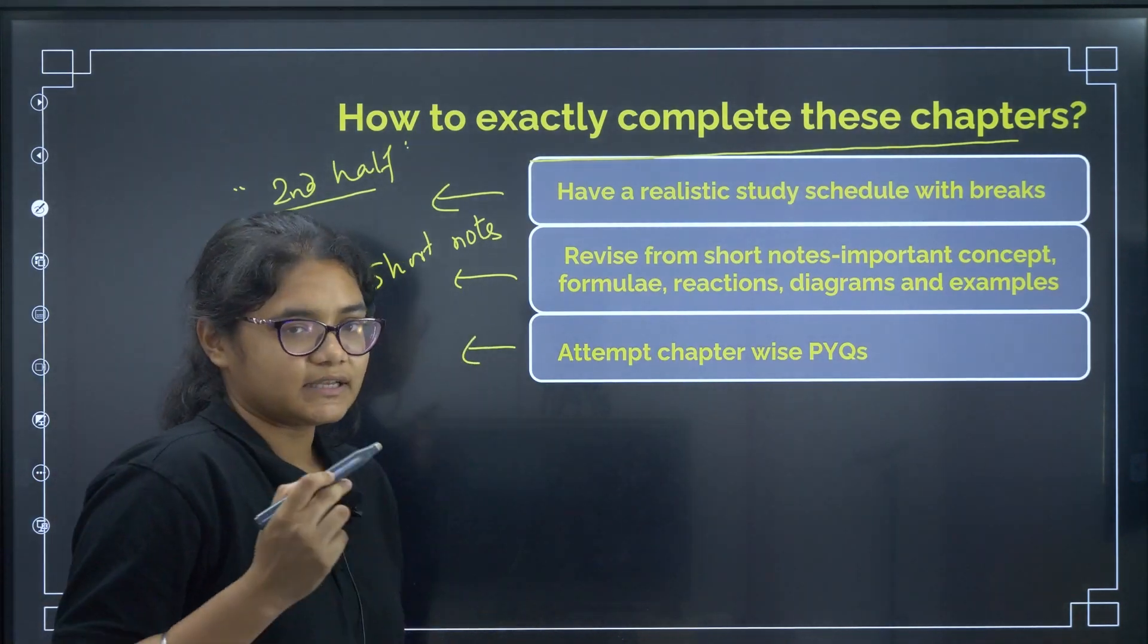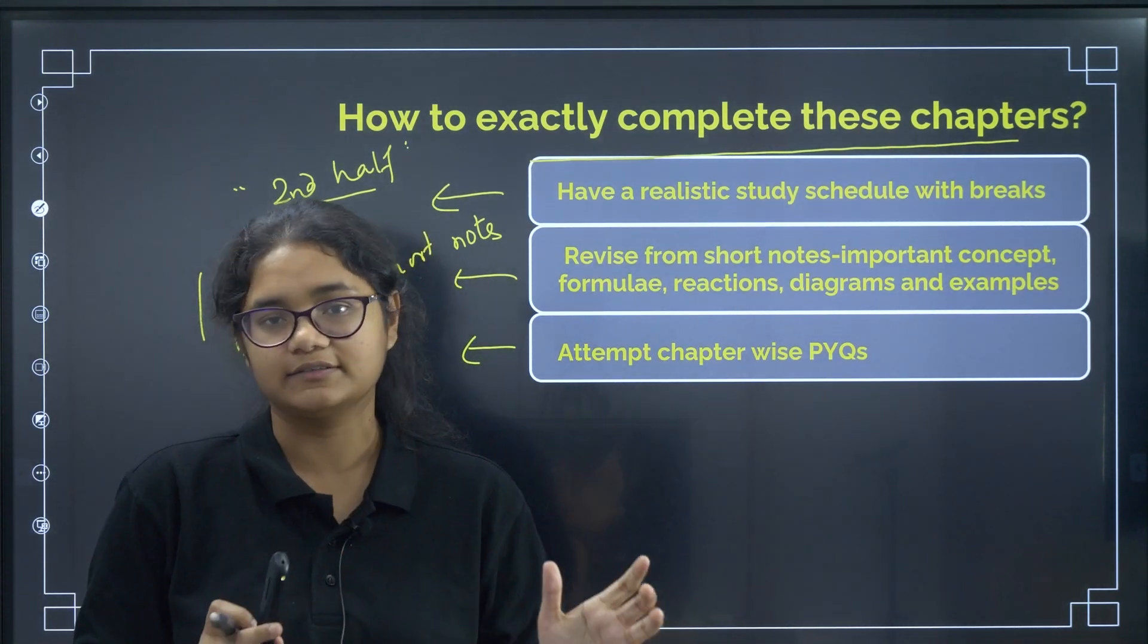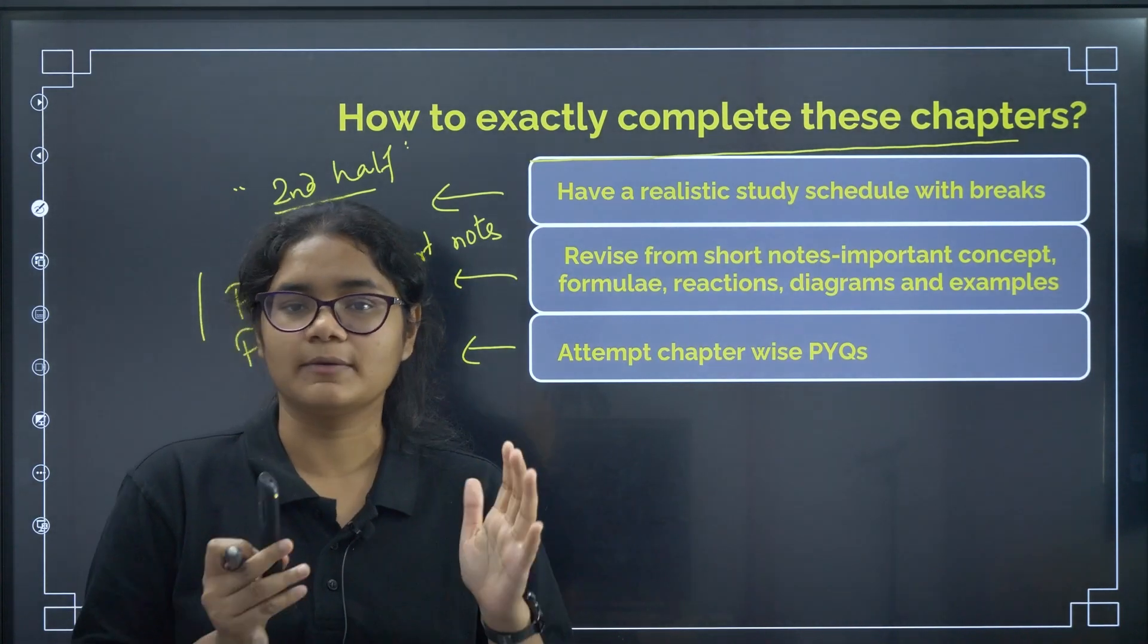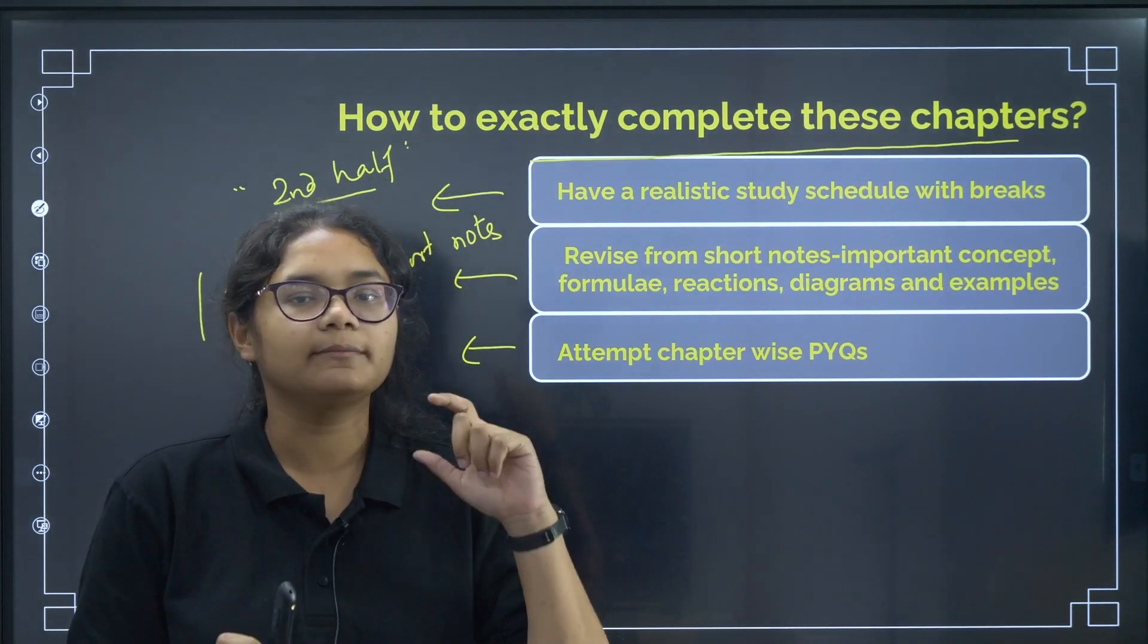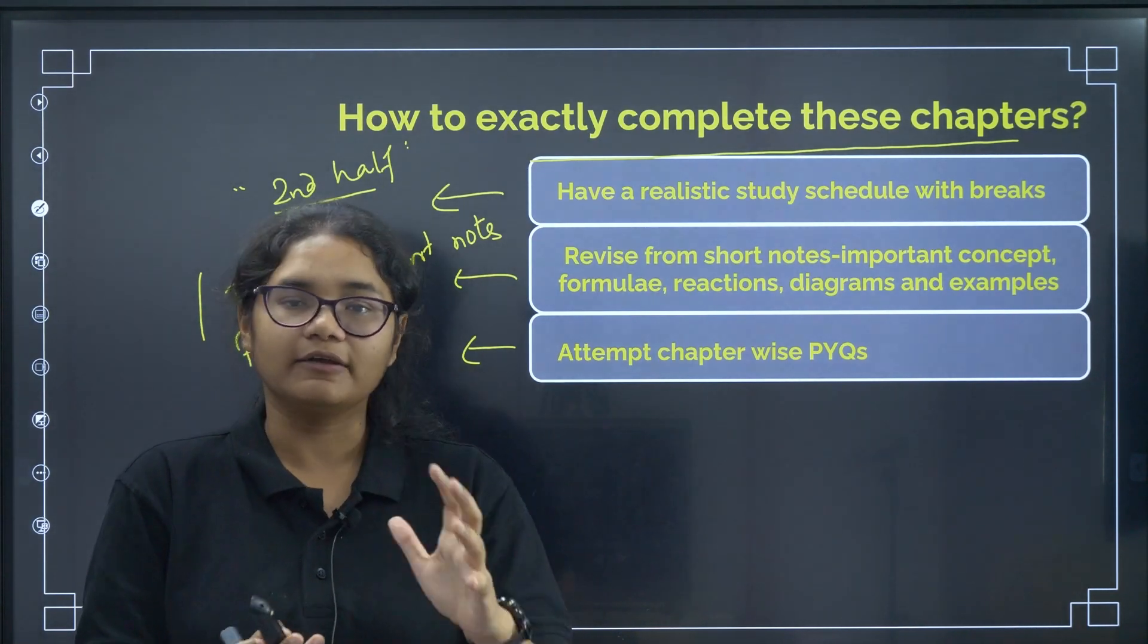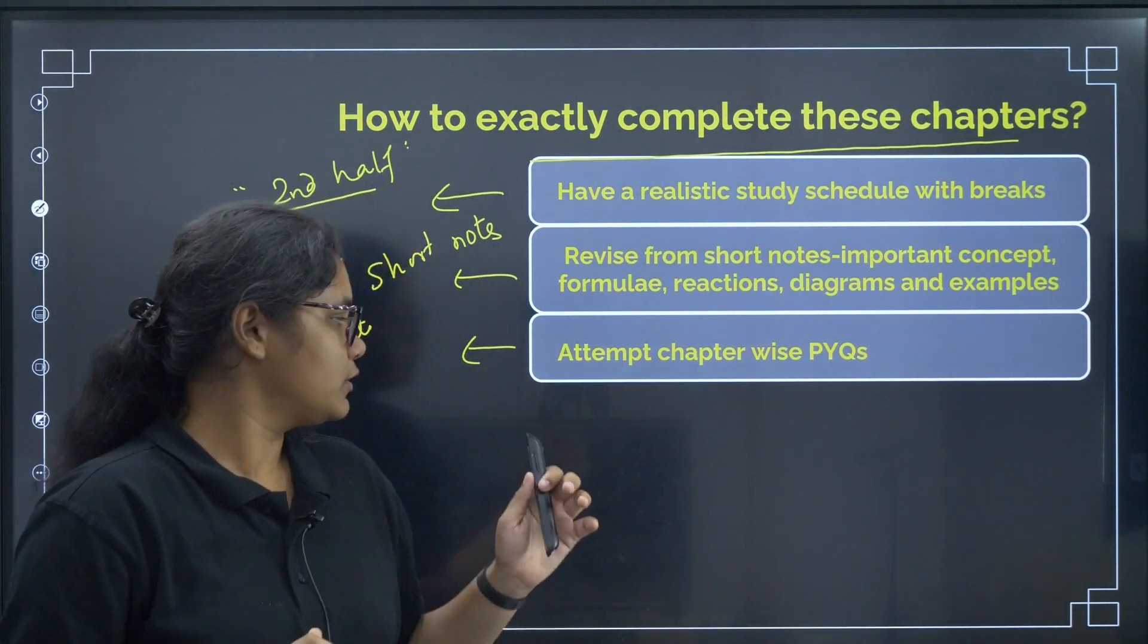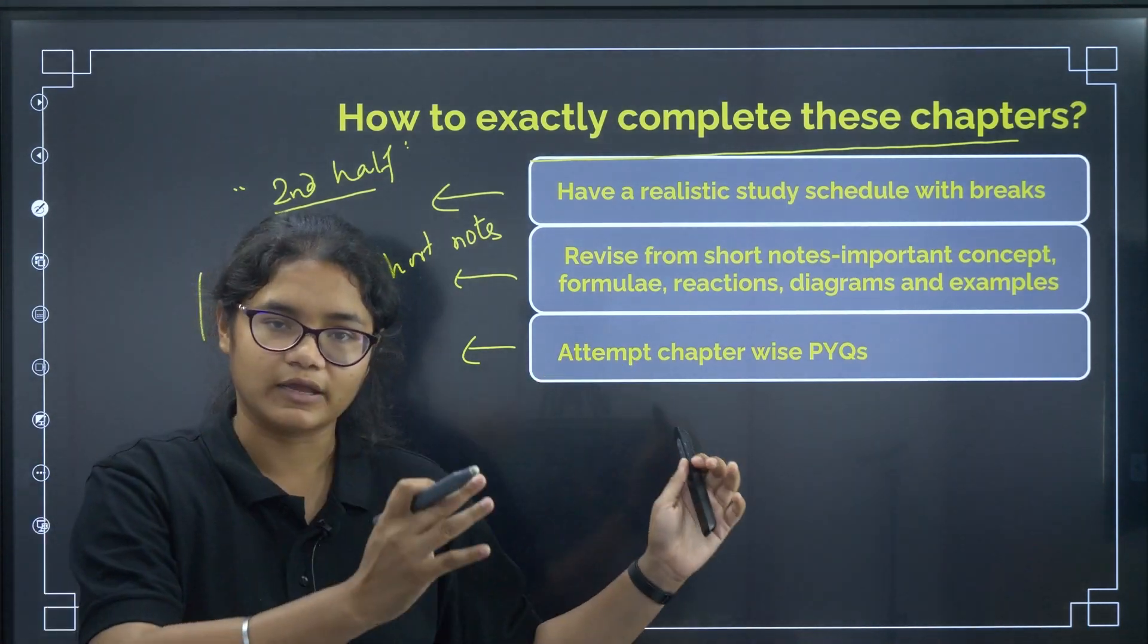Next, we have attempt chapter-wise PYQs. Again and again, I'm telling. If you don't have this chapter-wise PYQs also, we have a series of top 30 questions from each of the important chapters. Just watch them, try to solve these questions. And if you are able to do those questions, definitely you will get a confidence that this chapter you are able to do it. You can do by your own. If you don't have, you can refer to our videos.